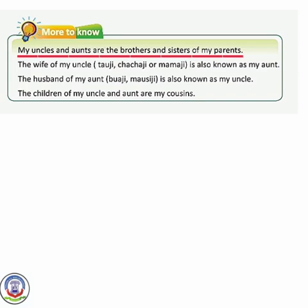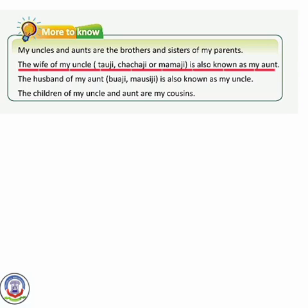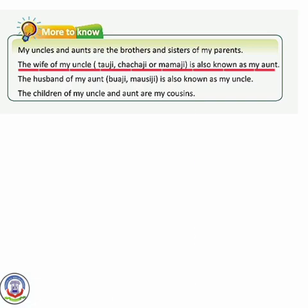Now, more to know: My uncles and aunts are the brothers and sisters of my parents. Uncle aur aunt kaun hote hain? Hamare parents ke brother ho sakte hain ya sister ho sakte hain, jinhe hum uncle aur aunt kehte hain. The wife of my uncle — Tao ji, Chacha ji, ya Mama ji — is also known as my aunt.